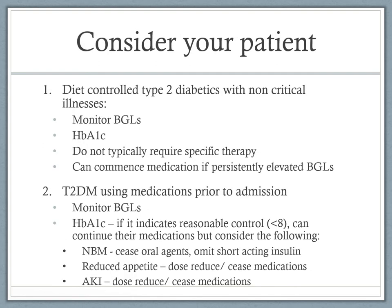The first example is a diet-controlled type 2 diabetic presenting to hospital with a non-critical illness. The first step is to monitor blood glucose levels to map how the patient is responding to the treatment plan and to help with titrations. You also want to check a HbA1c — either a new one or a recent outpatient result — to confirm the patient is actually controlling their diabetes well with diet alone. If they are truly diet-controlled, they don't require any specific therapy, but you can commence medications if they have persistently elevated BGLs.